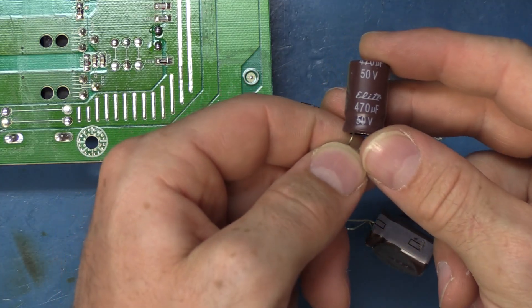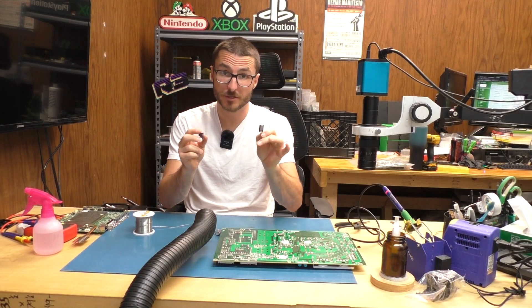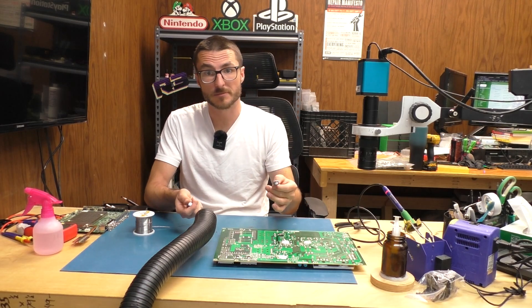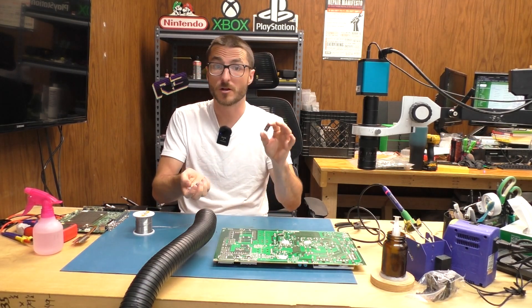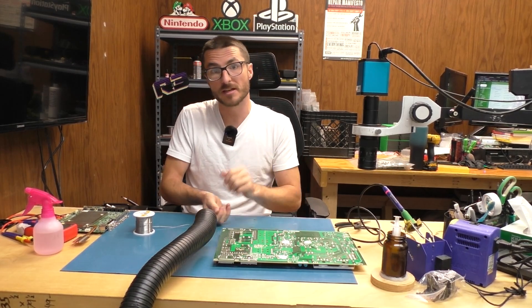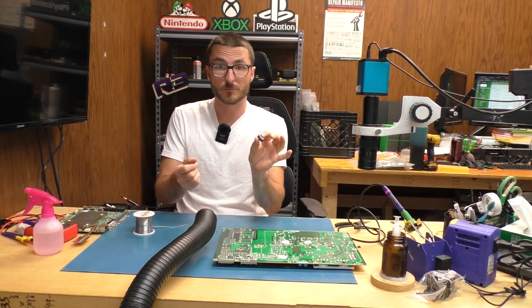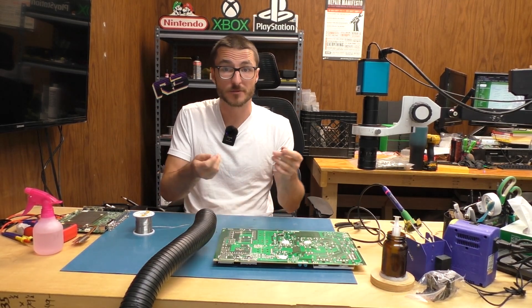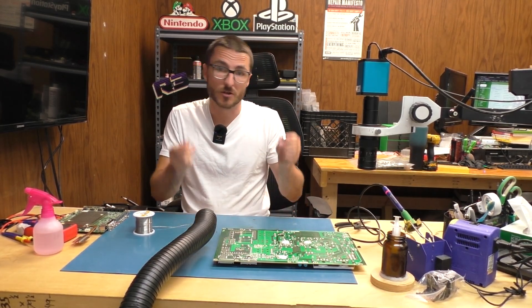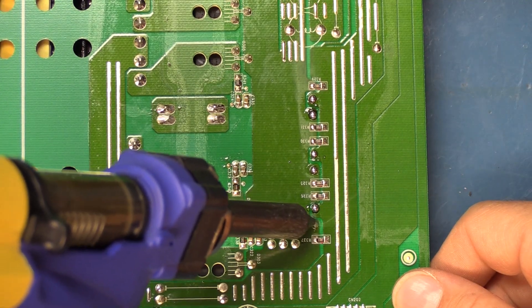Now these will probably test okay if I use the ESR meter. So we're not going to do a live check with those but we are still replacing them because we do sometimes see them go bad. So this is what we call a preventative repair. They may not have failed yet but because the others have failed it's an indication that these are probably near their end of life and should be replaced. If we don't this power supply may become defective in the next six months. So might as well replace all of the capacitors that can and do sometimes go bad. Now we're going to go ahead and desolder.